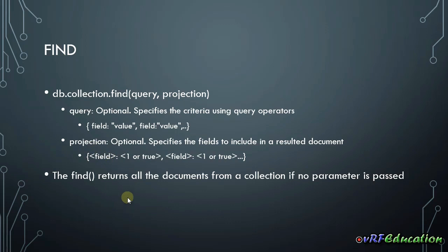If we call find without any parameters, it returns a cursor to all items in the collection. A cursor points to the first item in the list and then you move to the next one until the end. In Mongo shell it prints out the first 20 elements if you call find without parameters, but in real-world applications you use it as a cursor and iterate through items.